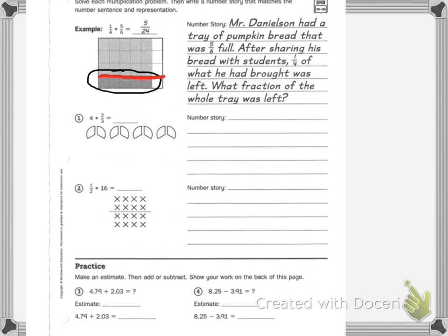I'm going to switch colors. Now I have 5 sixths: 1, 2, 3, 4, 5. The 5 at the bottom that are both orange and red are your numerator, and then we had 24 total. The number story is: Mr. Danielson had a tray of pumpkin bread that was 5 sixths full. After sharing his bread with students, 1 fourth of what he had brought was left. What fraction of the whole tray was left?